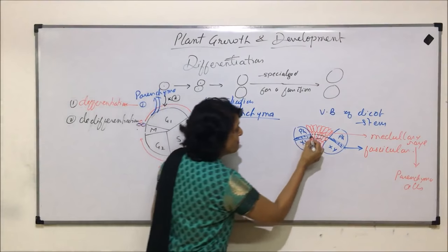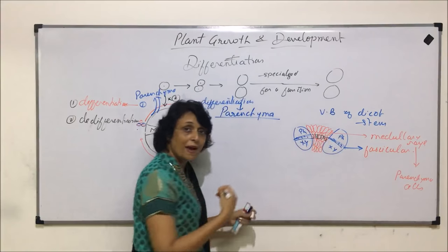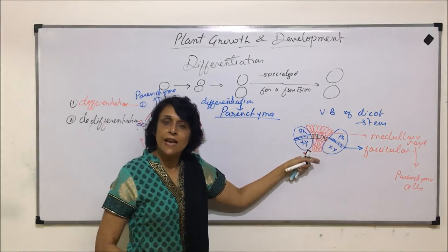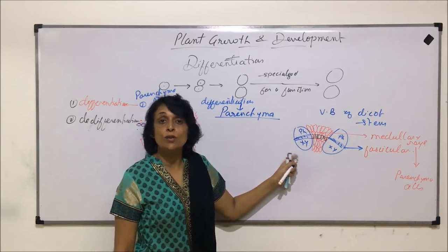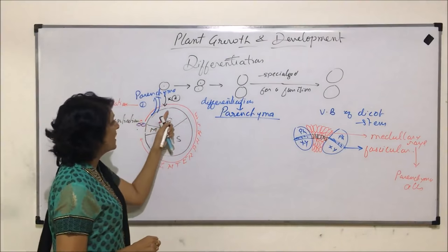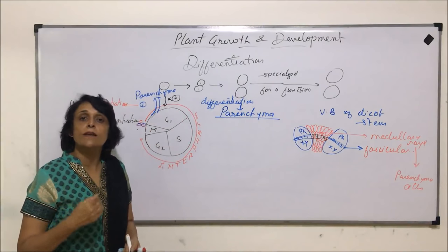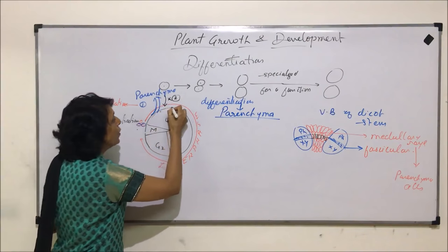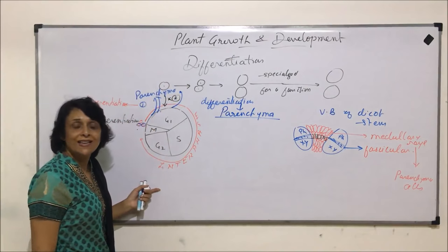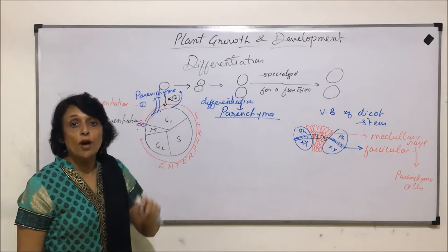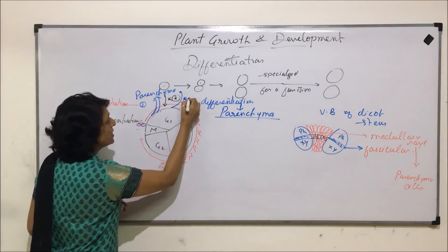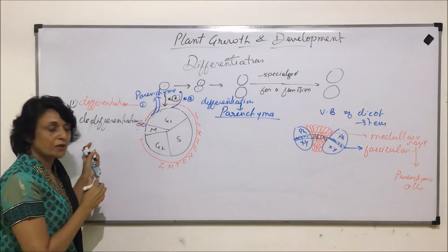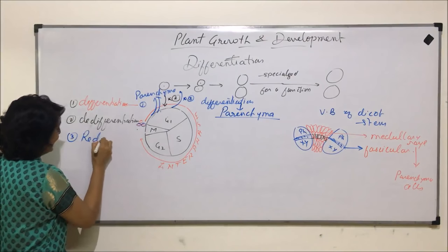After again becoming meristematic — meaning it is coming back into the cell cycle — the cell would divide to produce secondary phloem on the outer side and secondary xylem on the inner side during secondary growth. Once the secondary growth is over, the parenchyma cells which came into the cycle would again become specialized and come out of the cycle — they will not divide again. That process is called re-differentiation.